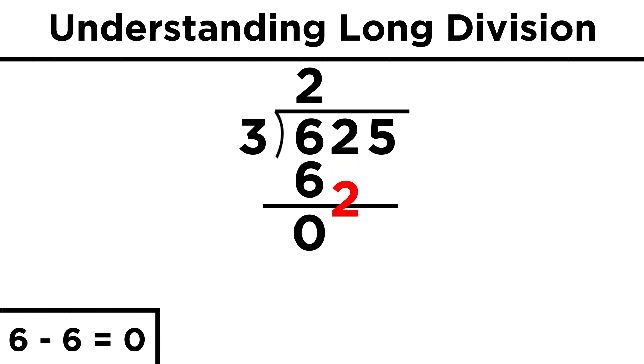Then we drop the next digit down and repeat the process. The next digit is a two. Three does not fit into two, or rather, two divided by three is less than one. So let's put a zero here. Zero times three is zero. Two minus zero is two, and then we drop down the five.